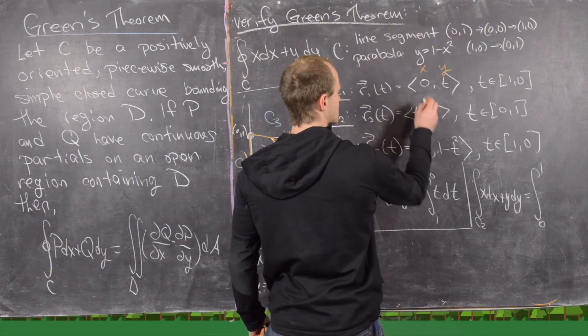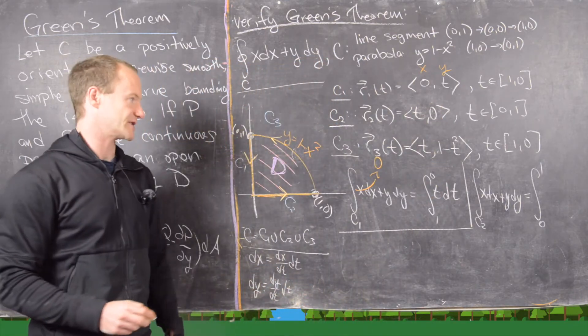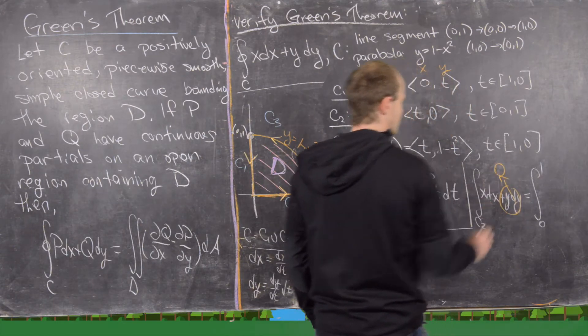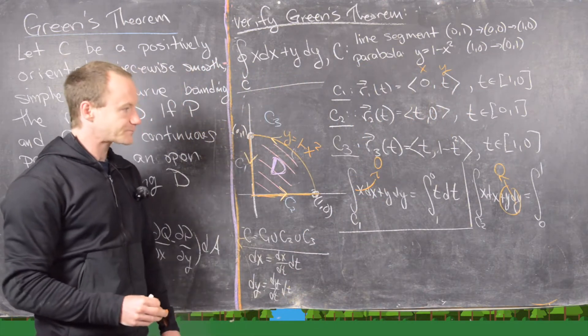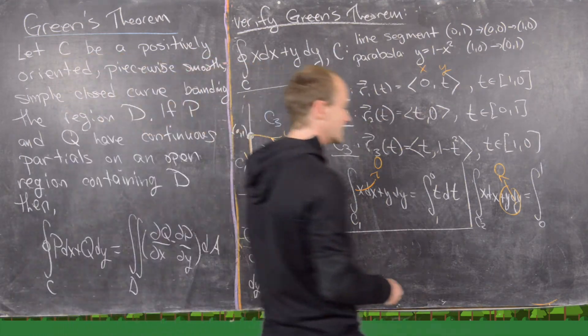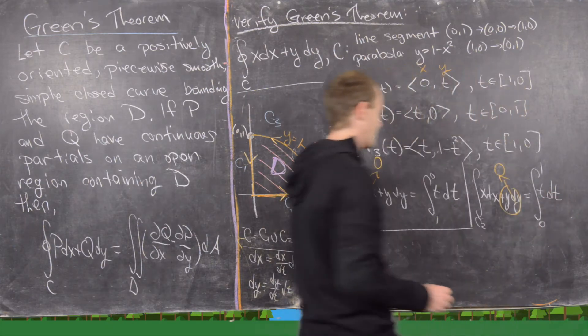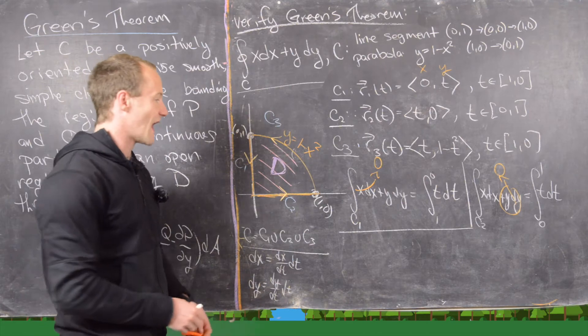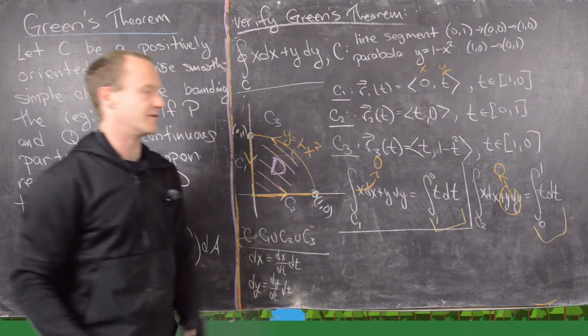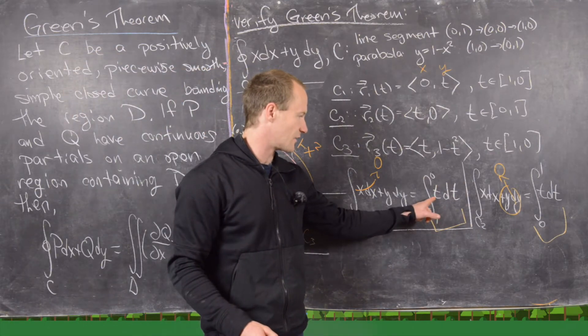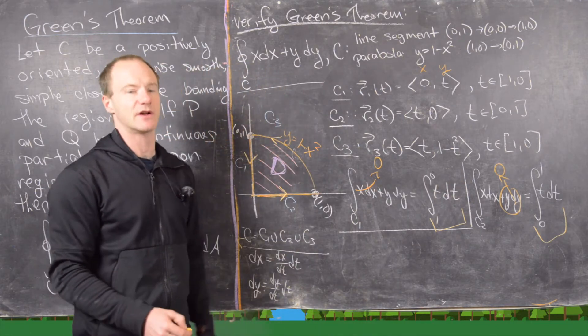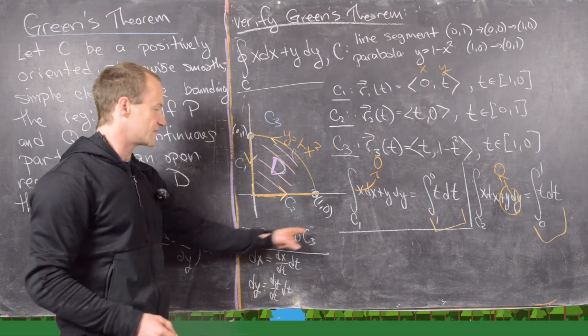And now here, the y component is always 0. So I made a mistake here. This should be t comma 0. So the y component is always 0, which means I can say that this is always equal to 0. And then the x component is equal to t, and then dx will just be dt. So here we have t dt. Okay, good. But now notice that this integral and this integral are equal and opposite of each other because this one is the integral of t dt running from 1 to 0, and that one is the integral of t dt running from 0 to 1. So when we add those together at the end, those are actually going to cancel.